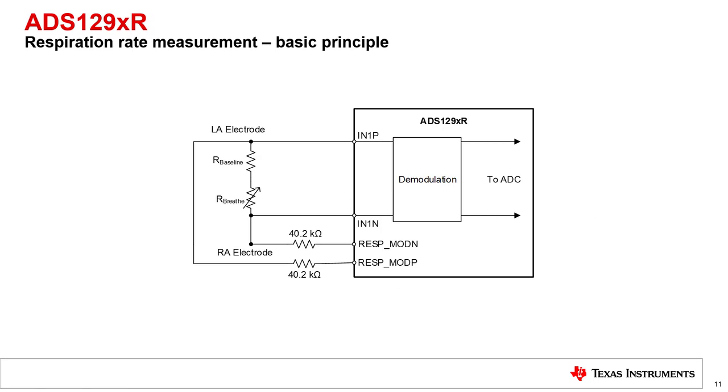As some applications also require the measurement of a patient's respiration rate, the R version of the ADS129X includes an integrated respiration feature. This feature measures the patient's respiration through a technique known as impedance pneumography. Essentially, this technique aims to measure the small changes in impedance across the thoracic cavity or chest as the patient inhales and exhales.